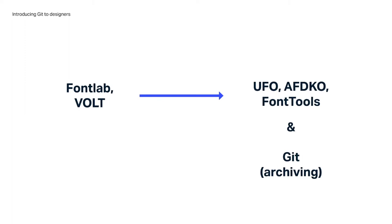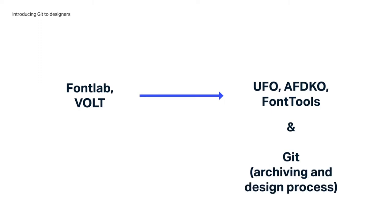Dalton Maag's previous process involved FontLab 5 for design, then moving to Volt for engineering — requiring a lot of manual work and not very flexible. Around 2016, the company moved to using UFOs, Adobe feature syntax, and fonttools to build fonts, while Git was mainly used for archiving and tracking releases. When I joined in 2017 we were in a transitional period, gradually starting to use Git also for the design stages.